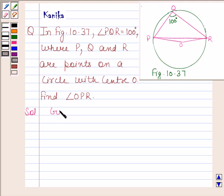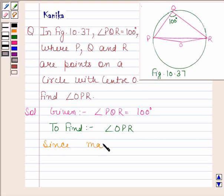Let us now begin with the solution. We are given that angle PQR is equal to 100 degrees and we have to find angle OPR. Now, since major arc PR, this is the major arc PR,